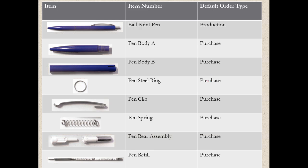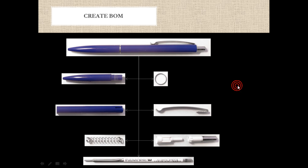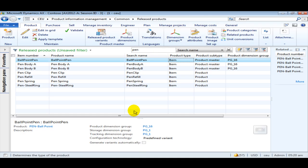As we have seen in the previous video, I'll be taking a pen as an example. We have here a ballpoint pen broken up into its subparts, where the main pen is of type production order and the other parts are of type purchase for a simple BOM. This is how it is being structured. So let's start with the creation of the BOM. In the introduction video we have seen how to create an item in AX 2012, and following those instructions I have created the following items for each of the subparts and for the finish good.